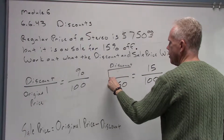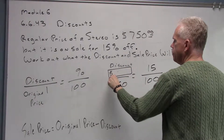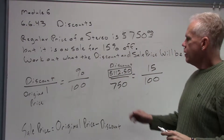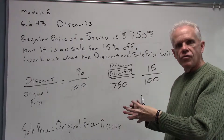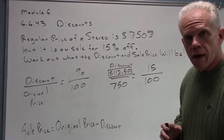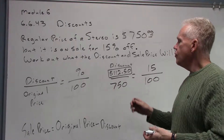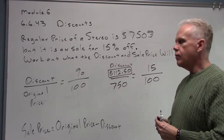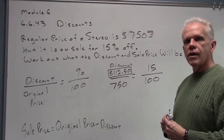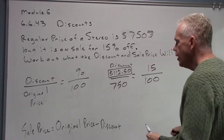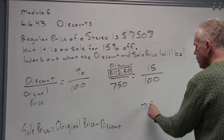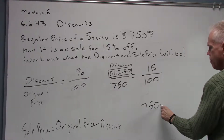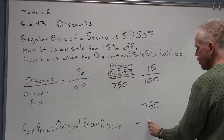So my discount is $112.50. Let's put a zero behind that because this is money — that's the amount they're going to take off the price of the stereo. My discount is $112.50. Now my sale price is going to be my original price of $750 minus my $112.50.